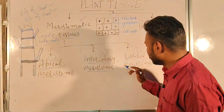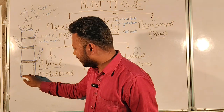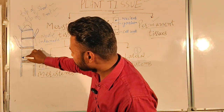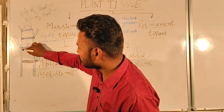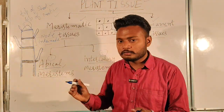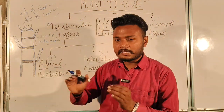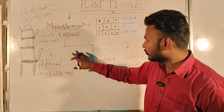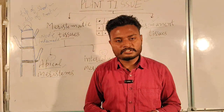The next type is lateral meristem. Lateral meristem is found along the lateral sides of the shoot, and it generally helps the plant to grow in width — meaning it helps in increasing the width of the stem. I hope you all understood the topic. Thank you, have a nice day.